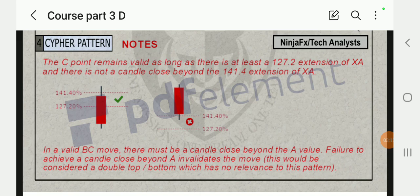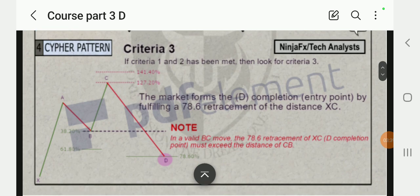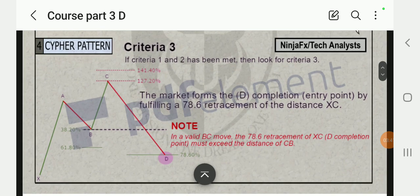The C point remains valid as long as there is at least 127.2 extension of XA and there is not a candle close beyond 141.4 extension of XA. In a valid BC move there must be a candle close beyond the A value. Failure to achieve a candle close beyond A invalidates the move. This would be considered a double top or bottom which has no relevance to this pattern.